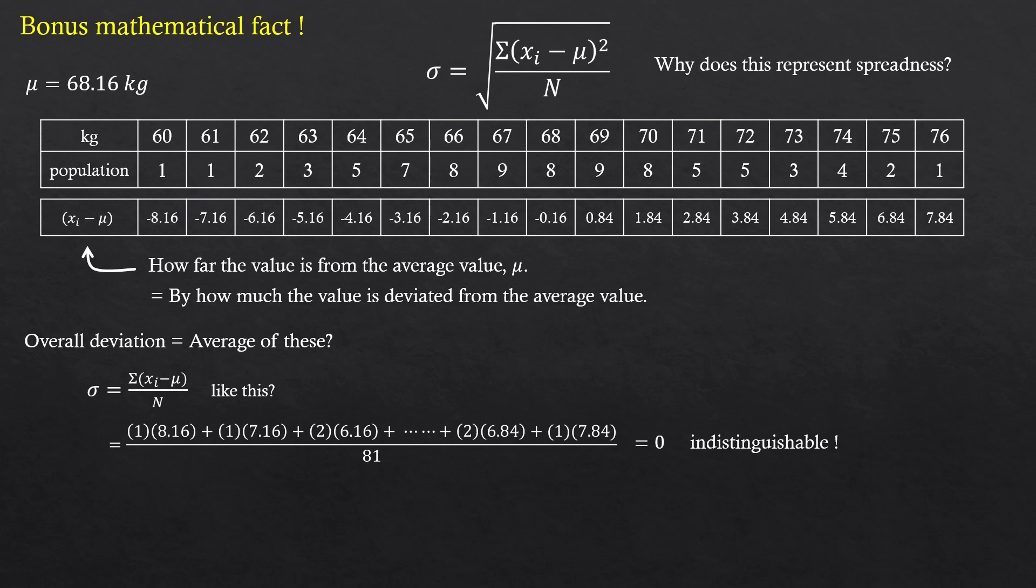But now if you square each individual difference, then average them, you won't lose the information on spreadness. That's because by squaring it, we're getting rid of these minus signs. These minus ones were the ones that were canceling the other half of the data, and that's why we are getting zero. Anyway, of course, you'll have to square root it back since we intentionally squared them before. And this is how standard deviation was defined.